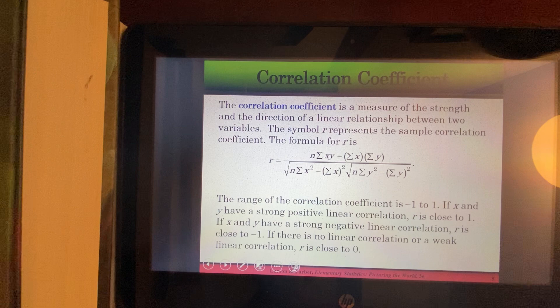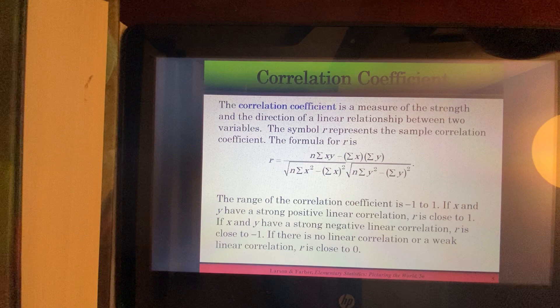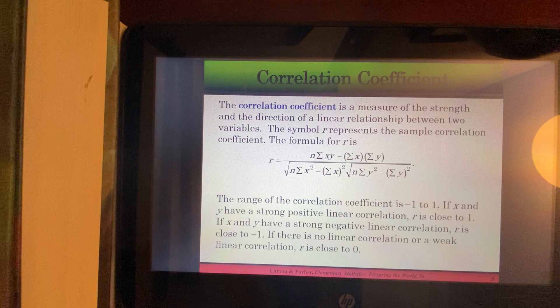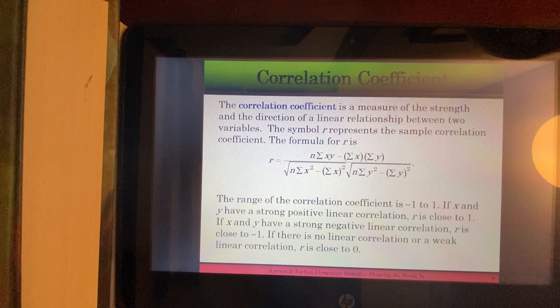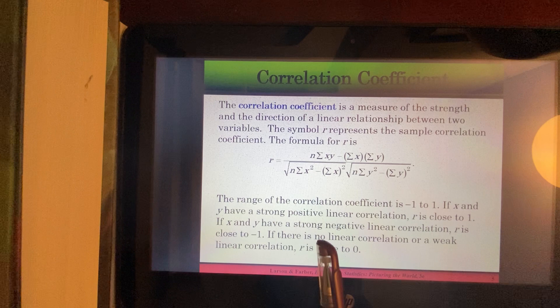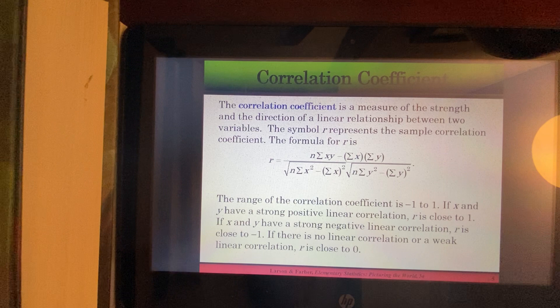The range of your correlation coefficient is negative 1 to positive 1. Okay, and that's inclusive. So R can be negative 1 or positive 1 or anything in between. If X and Y have a strong positive linear correlation, then R is going to be close to positive 1. If X and Y have a strong negative linear correlation, R is going to be close to negative 1. If there is no correlation or a weak linear correlation, the R value is going to be close to 0.